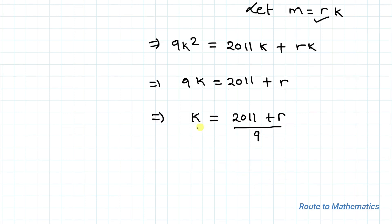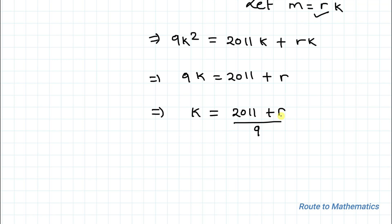This gives us k equals (2011 plus r) divided by 9. To find the smallest possible value, we need r plus 2011 to be divisible by 9. Testing r equals 1, 2, 3, 4 — none yield a value divisible by 9. For r equals 5, we get 2016, which is divisible by 9, giving k equals 2016 divided by 9, which equals 224.